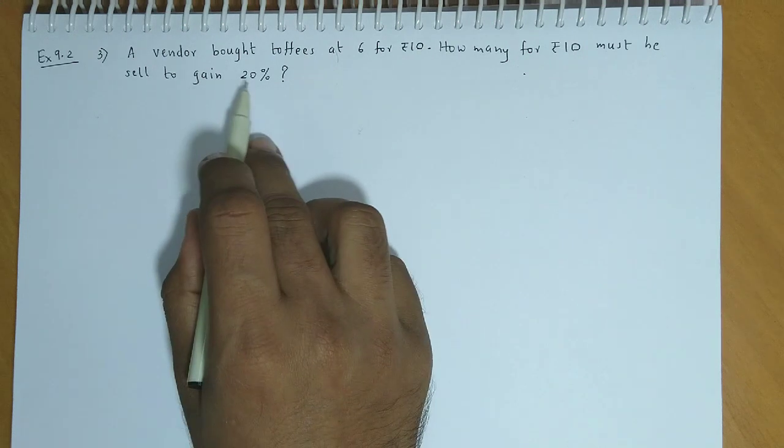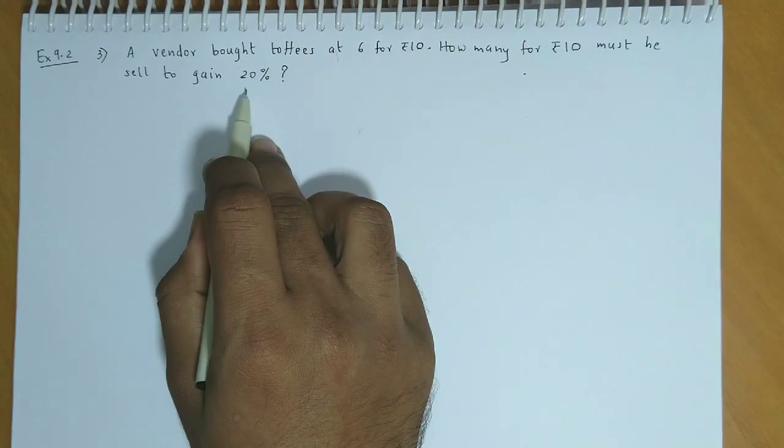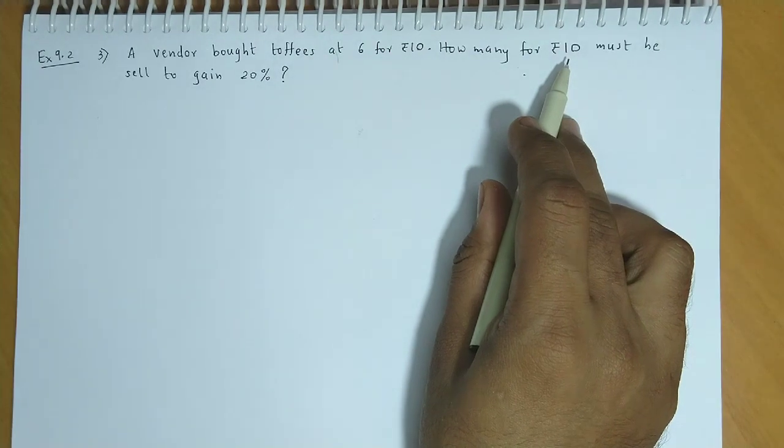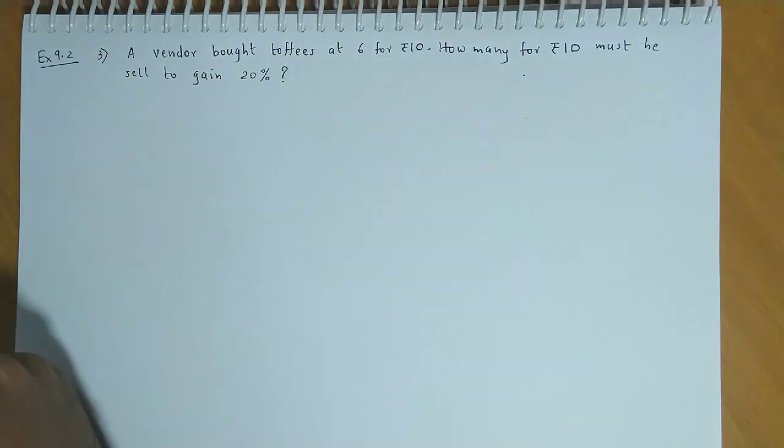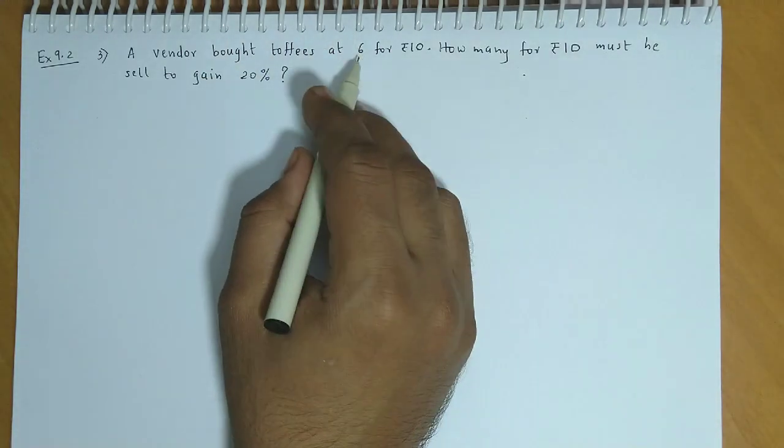If he needs 20% profit or gain, then in 10 rupees, he needs to sell how many toffees? Let us see how we solve this.